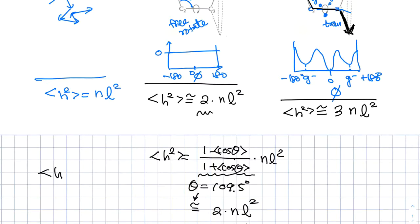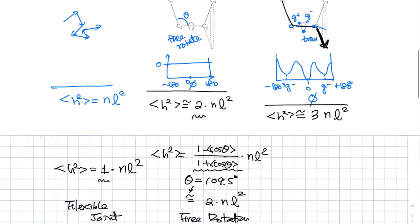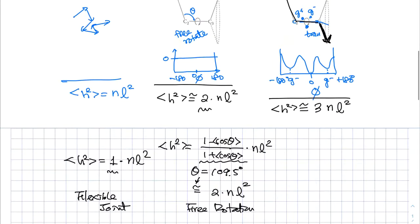And you remember, H square is essentially one times N L square. And that is a case of flexible joint. And then finally, this one, the math is a little bit more complicated, but I will just write the whole things.